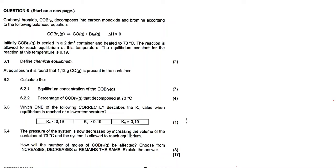Alright, what's up family. Question 6 is all about chemical equilibrium. This question paper is from the 2017 November exam. Carbonyl bromide decomposes into carbon monoxide and bromine according to the following balanced equation. The forward reaction is endothermic since delta H is greater than zero. Initially, carbonyl bromide is sealed in a two cubic decimeter container and heated to 73 degrees Celsius. The equilibrium constant for the reaction at this temperature is 0.19.